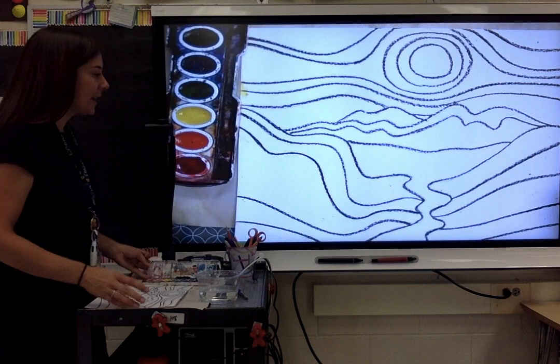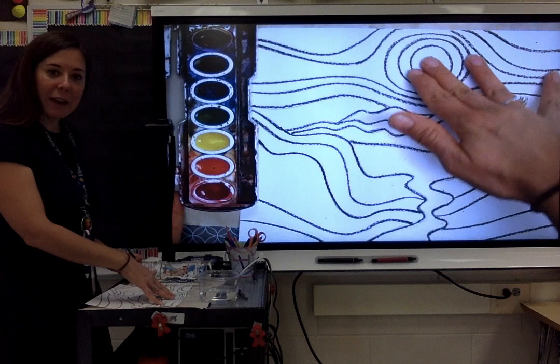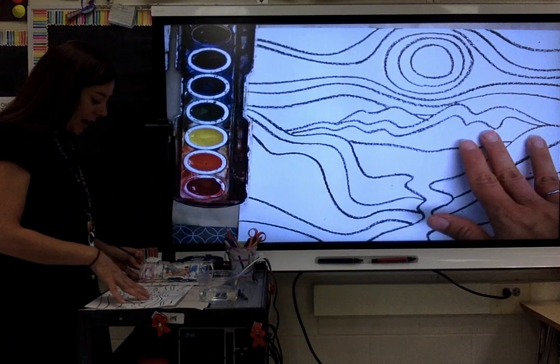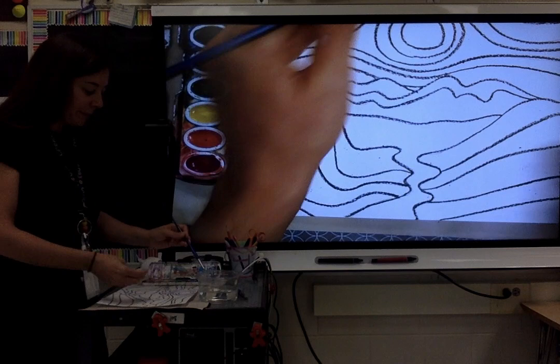Alrighty, so first thing I like to do is start with either the top or the bottom. It really doesn't matter for this. We're gonna be doing probably more warm colors in the top half of the paper where there's sky or sun or sunset or whatever it is that's happening in your image, and then the bottom half might have more of the cool colors as long as you show both color groups.